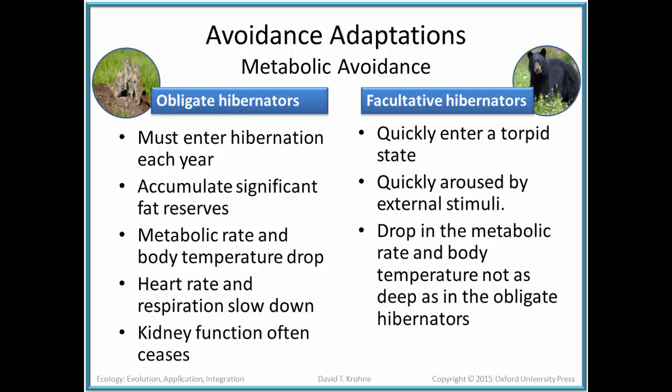There are two types of hibernators. Obligate hibernators — such as groundhogs, northern ground squirrels, and chipmunks — must enter hibernation each year. They accumulate significant fat reserves, often find a hibernaculum (a place to hibernate such as a burrow or den), and their metabolic rates, body temperature, heart rate, respiration, and kidney function all drop dramatically or even stop. These are true hibernators that characterize the concept of hibernation.